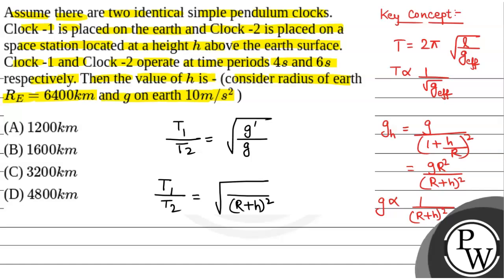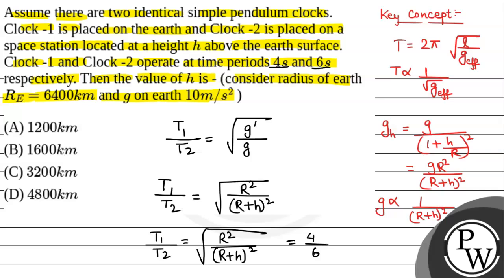This gives us T1/T2 = r / (r + h). With T1 equal to 4 seconds and T2 equal to 6 seconds — those are the time periods of both clocks — we get r / (r + h) = 4/6.